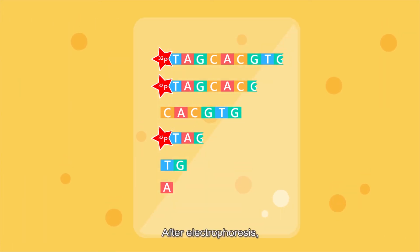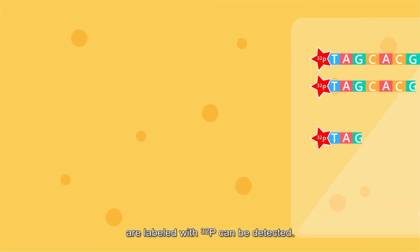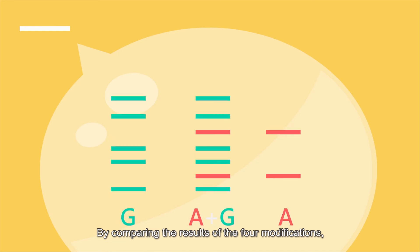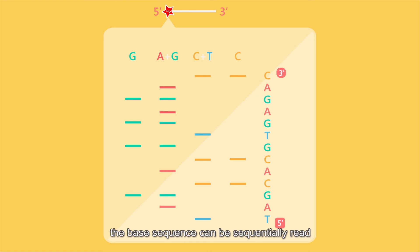After electrophoresis, a film is exposed to the gel. Only the fragments which start from the five prime ends and are labeled with phosphorus-32 can be detected. By comparing the results of the four modifications, the base sequence can be sequentially read.